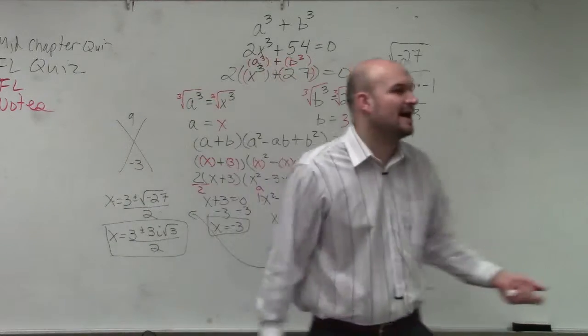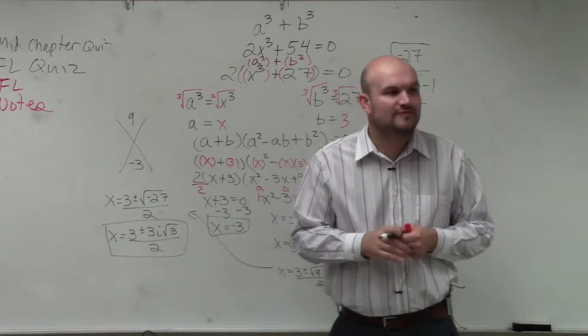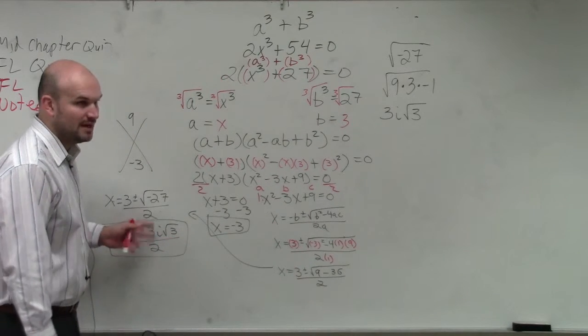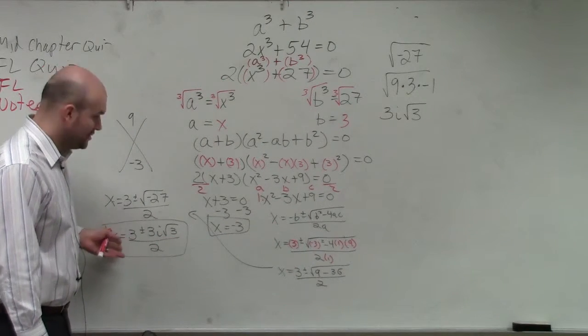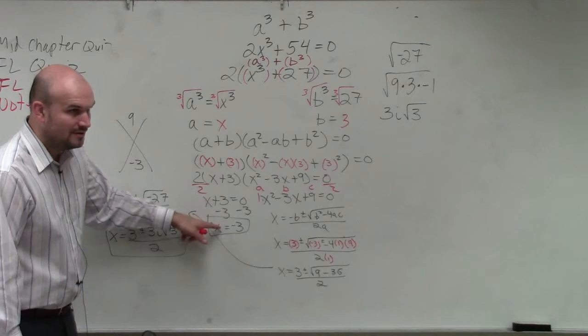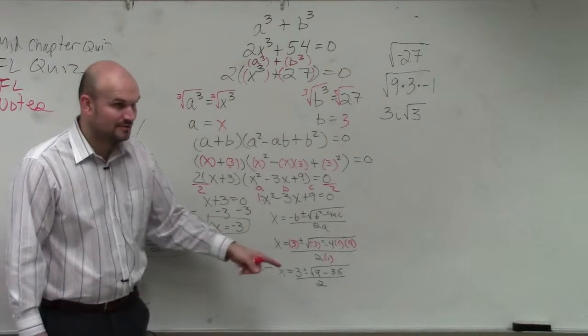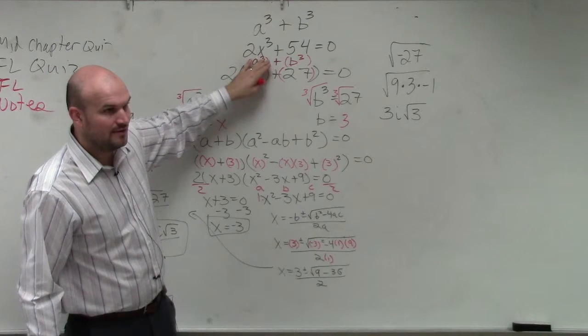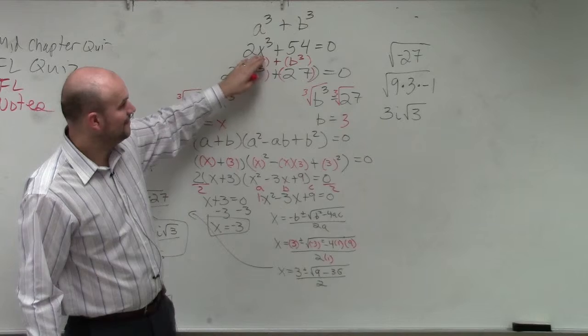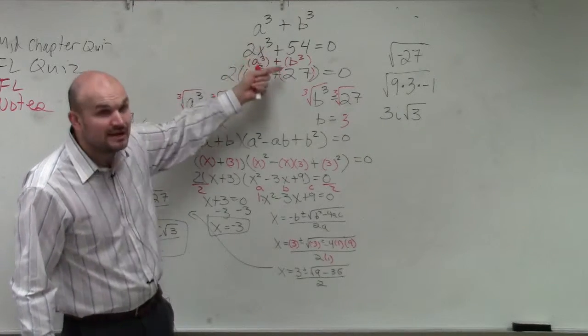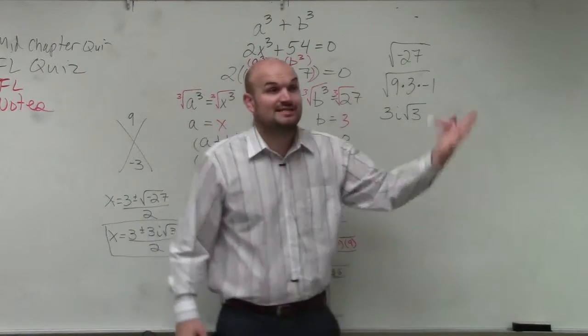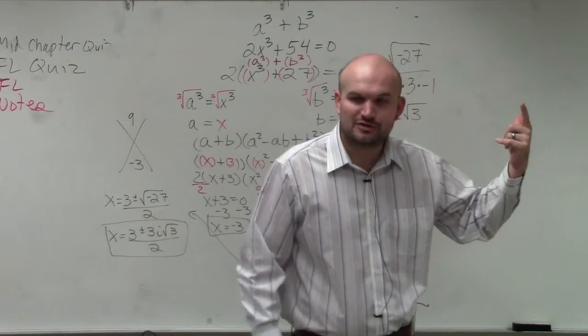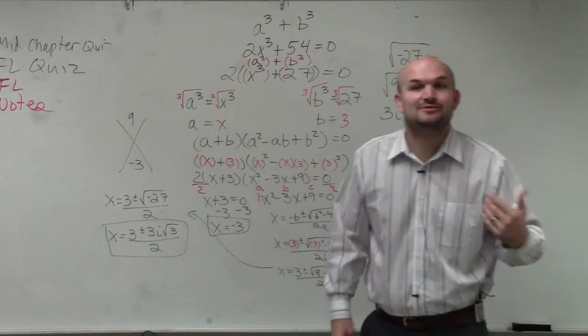So your solutions are here and here. Now, how many total solutions do I have? Correct. How many total solutions do I have? How many are here? 2. How many are here? 1. How many is that total? 3. Based on the degree of this polynomial, how many am I supposed to have? What's the degree of this polynomial? 3. So if the degree is 3, that tells you there's 3 solutions. Does everybody agree? However, here's kind of a little tricky question.